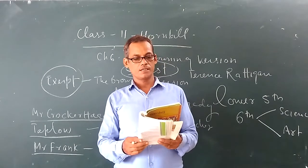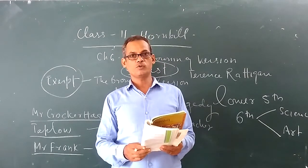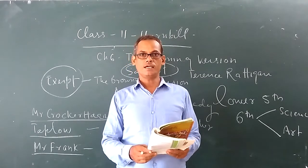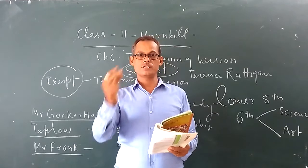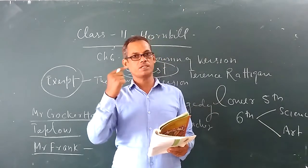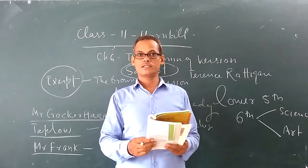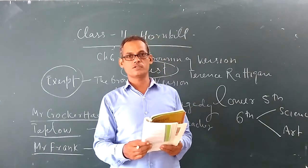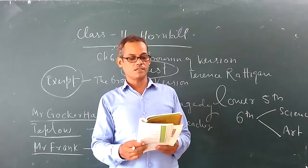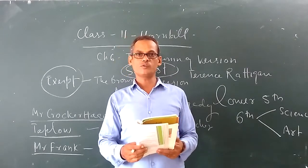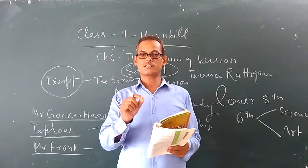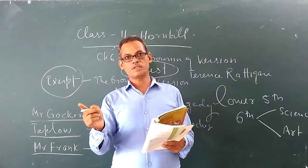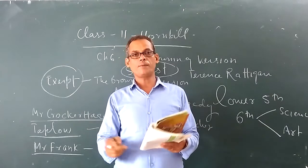So you should try to understand that the original book, that is Agamemnon, is written by Robert Browning, and the English translation is done by Terence Rattigan. That's why the chapter is called The Browning Version, because it is translated by Terence Rattigan from Robert Browning's book Agamemnon.